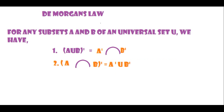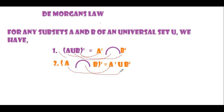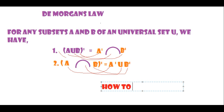So this is the way to remember De Morgan's Law. A will always be changed to A prime, union sign will always be changed to intersection sign, and B will be changed to B prime. And when removing the brackets the other way: A becomes A prime, intersection becomes union, and B becomes B prime.